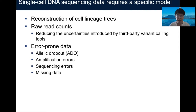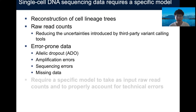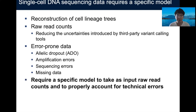For example, at the whole-genome amplification stage, one allele can be dropped out and never be sequenced. This is called allelic dropout, or ADO. There can also be other types of errors, for example amplification error and sequencing error. Moreover, in the real dataset, missing data is also abundant. Therefore, single-cell DNA sequencing data requires a specific model to take as input raw read counts and to properly account for technical errors.